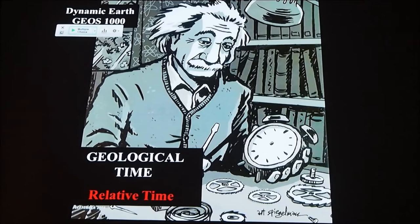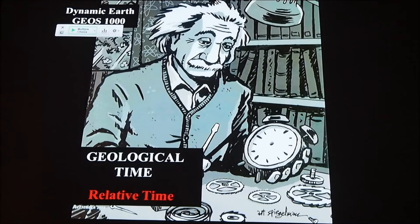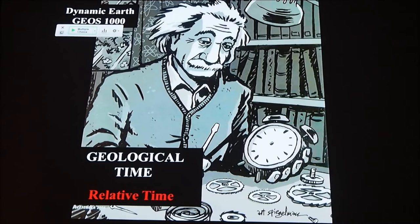And we think of time in two very distinctly different ways. One is relative time, which is what we're going to talk about today. And it's nothing more than putting things in order. What came first? What happened second? What's the spatial relationship of these rocks to each other? And by doing that, we know the chronologic relationship time-wise.